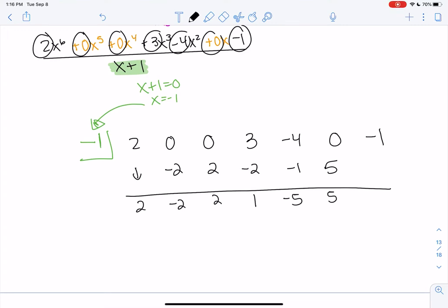And then negative 1 and 5 multiplied brings me back to negative 5. And we get negative 6 as our remainder. The last one is always the remainder.